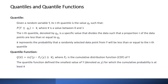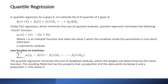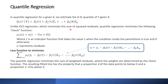In quantile regression, for a given tau we estimate the tau-th quantile of y given x. Unlike OLS regression which minimizes the sum of squared residuals, quantile regression minimizes a check function. In the check function, u represents the residuals and an indicator function takes the value one when the condition is true and zero otherwise. The loss function minimizes weighted residuals where weights are determined by the check function. The resulting fitted line has the property that a proportion tau of data points lie below it and a proportion 1 minus tau lie above it.